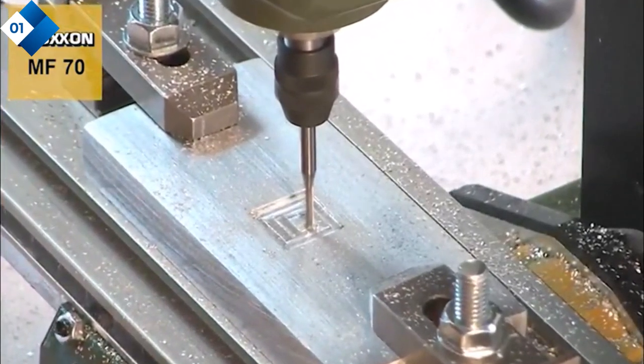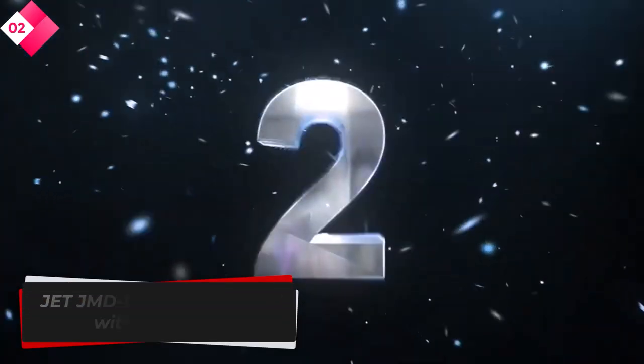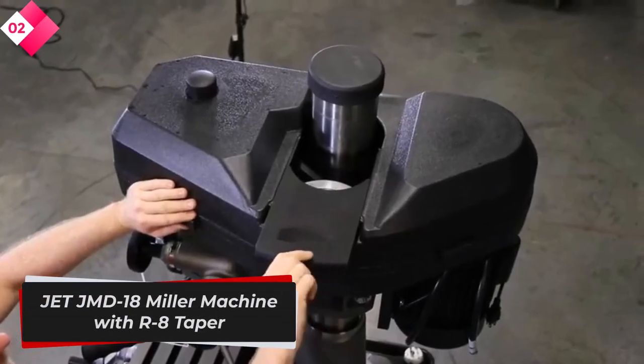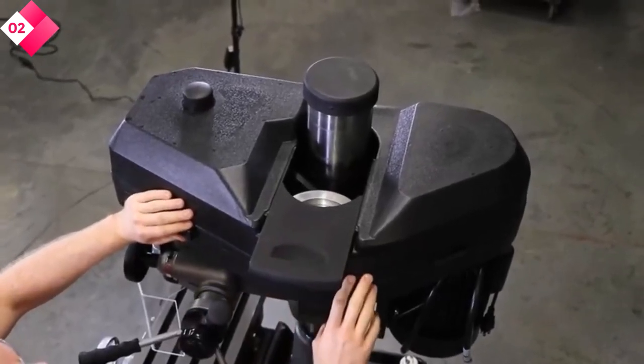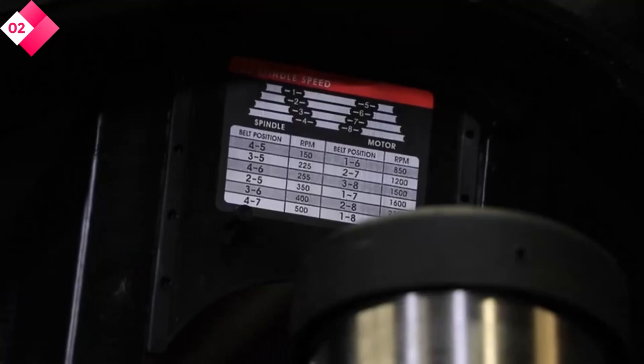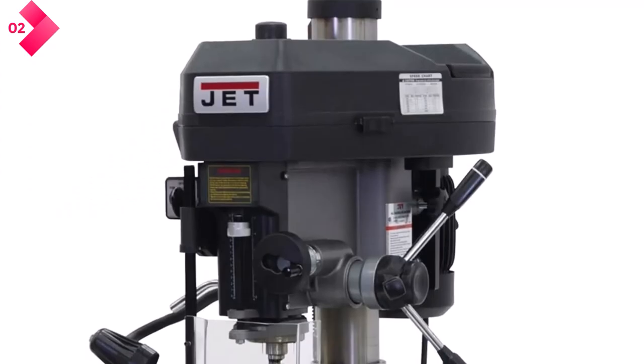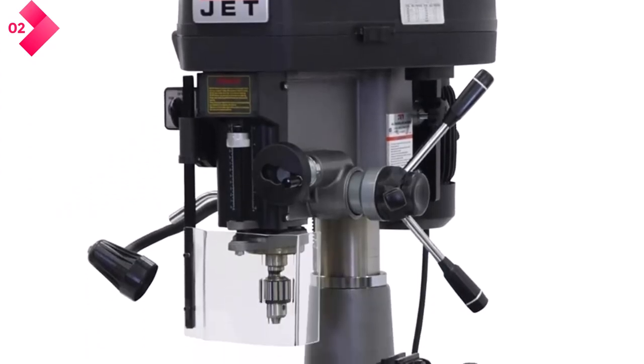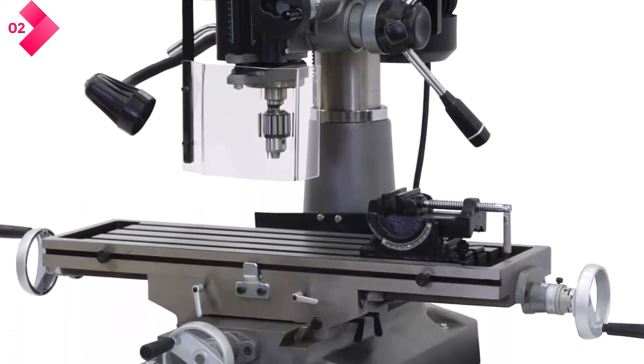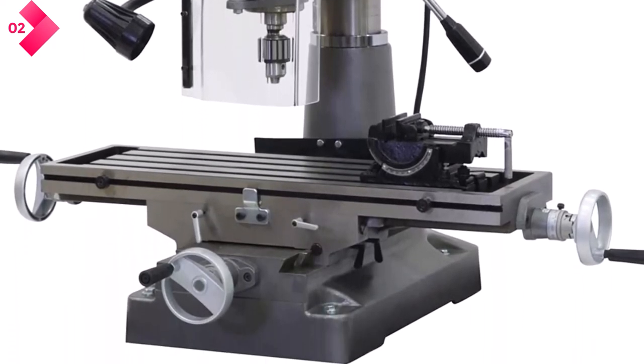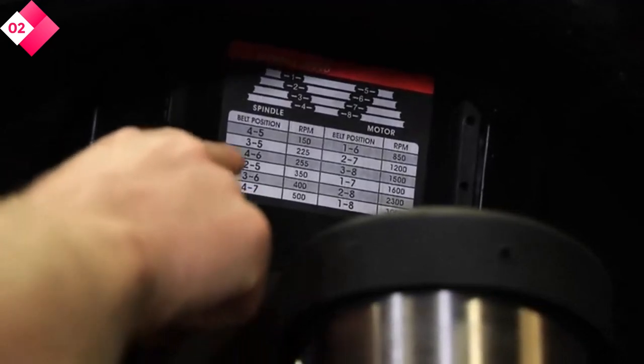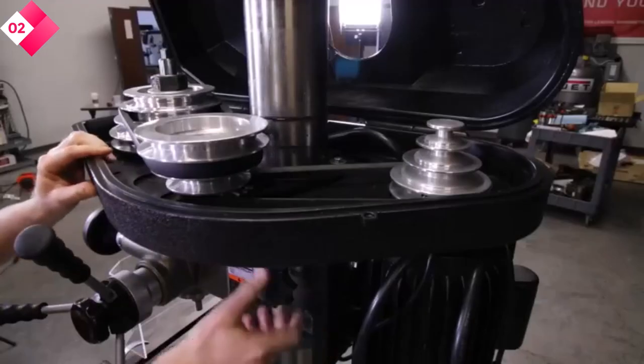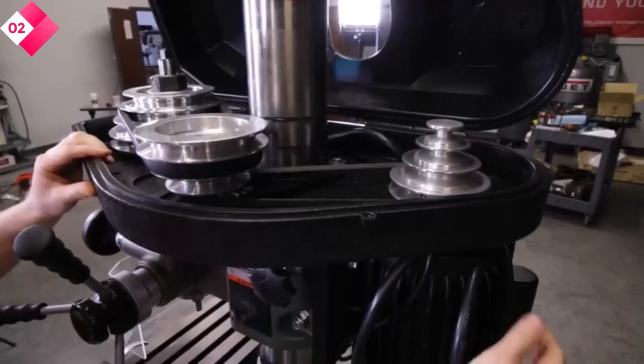Number two: Jet JMD 18 Miller machine with R8 taper. This miller machine is designed to offer the convenience of both milling and drilling operations in a single tool. This versatility eliminates the need for multiple machines, saving space and cost. Whether you need to perform precision milling tasks or accurate drilling operations, this machine has you covered, making it an ideal choice for workshops with limited space. This taper system offers improved concentricity and stability, minimizing runout and maximizing machining accuracy.